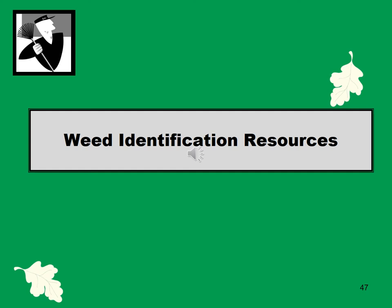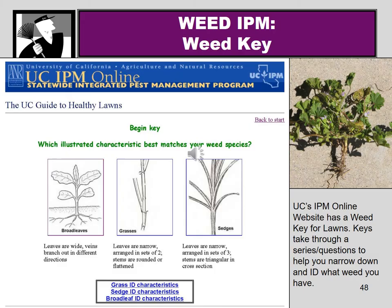Let's do a little weed identification — knowing your weed and how to manage it is especially helpful with IPM. A great resource is the UC IPM online website's Guide to Healthy Lawns, which has a key to figure out what type of weed is in your turf or lawn. The first part of the key asks you which illustrated characteristic best matches your weed species — you choose one of three: broad leaves, grasses, or sedges.